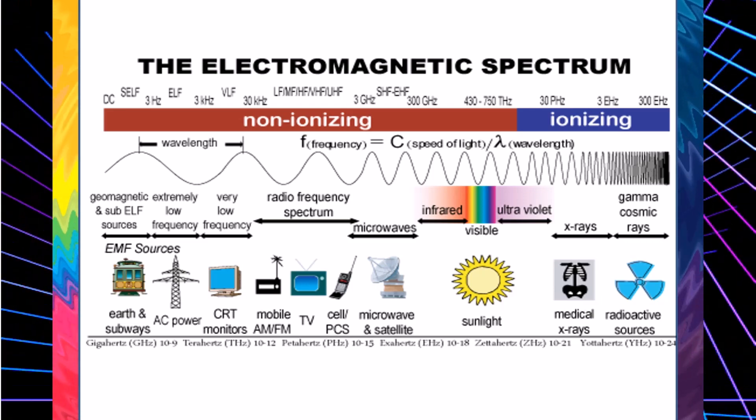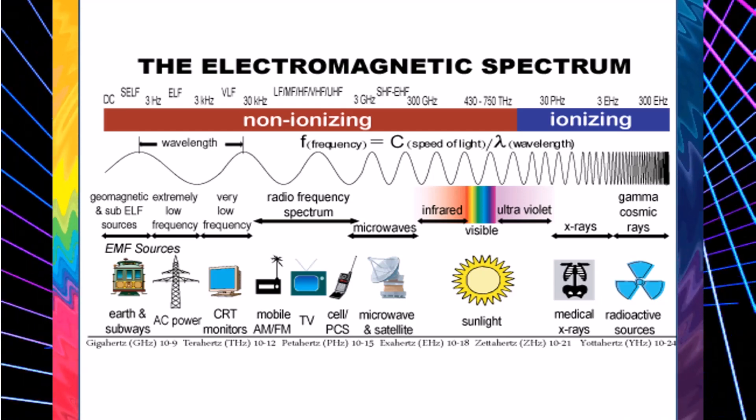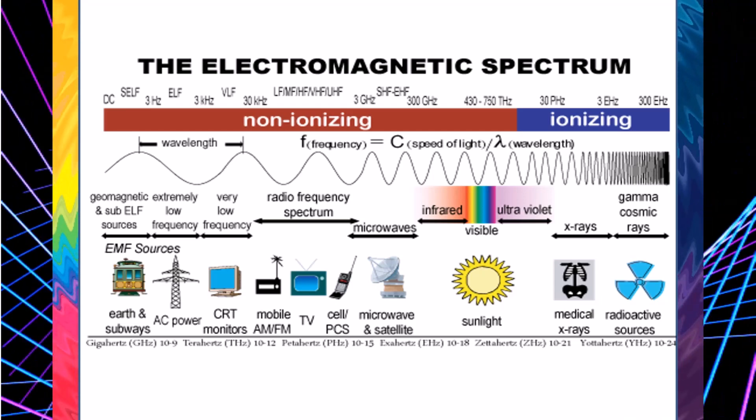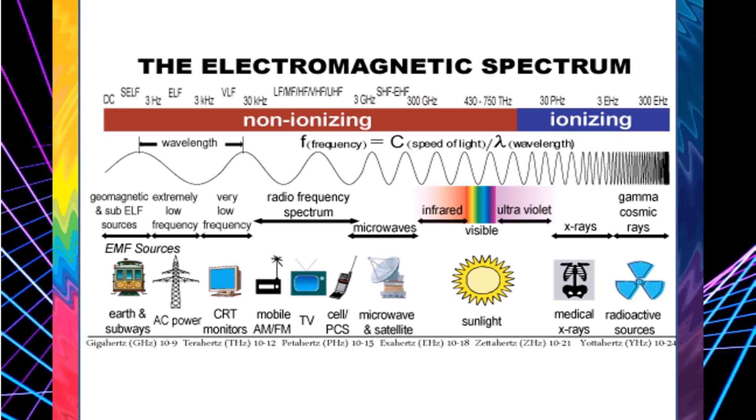Ultraviolet waves come from the sun and cause skin cancer, but can also be used to sterilize and disinfect medical instruments, to make fluorescent materials light up, and check that banknotes aren't counterfeit.